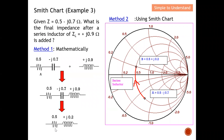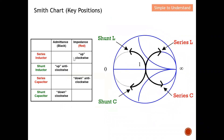In summary: to add a series inductor, move up in a clockwise direction on the Smith chart. To add a series capacitor, move down in an anti-clockwise direction. This video has focused on series components only. The next video will cover shunt components. This is how we introduce a series L or C component onto an impedance on the Smith chart. Thank you so much for your strong support — please like and subscribe, and see you next time.